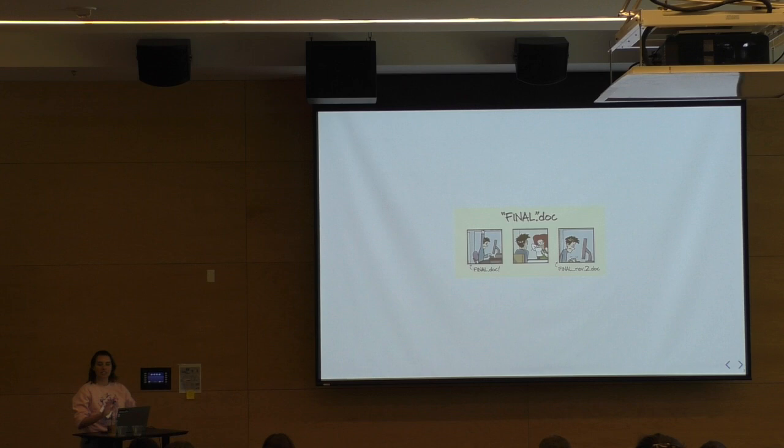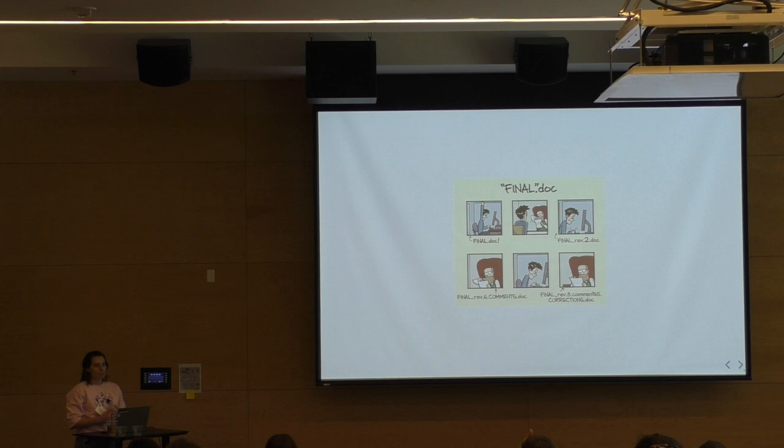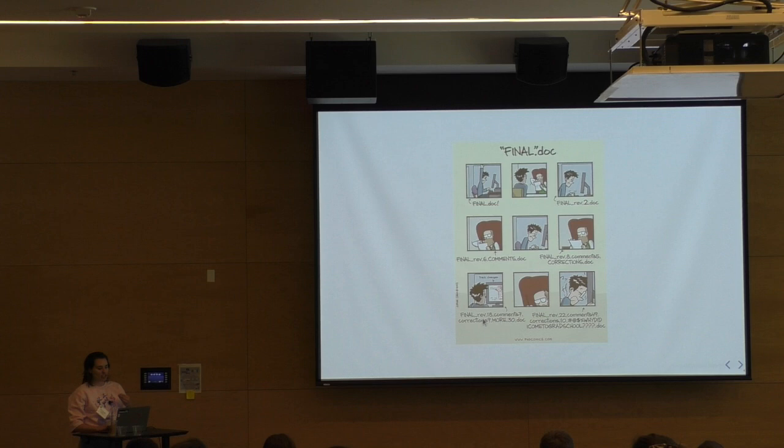So you end up with 'still the final paper with some revisions dot doc.' But then you give it to your colleague again and the numbers have gone up a little bit — first it was version two, now it's version six, now it's version eight with corrections. Then you're at revision 18, more comments, corrections nine, version 30. And then the end one is: why did I come to grad school?